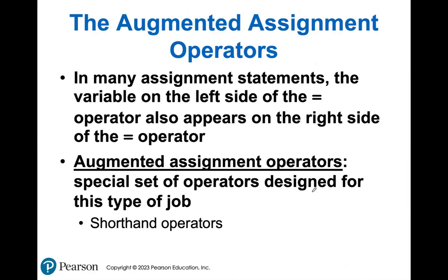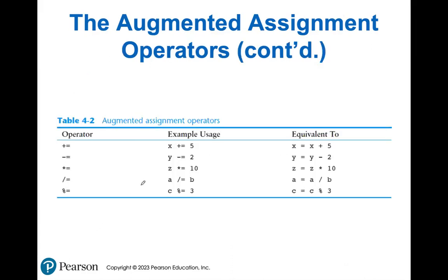Augmented assignment operators, also called shorthand operators, are very useful. Instead of writing x equals x plus five, you can just write x plus equals five. Whatever operation you need - addition, subtraction, multiplication, division - just put that sign next to an equal sign and the value. So x plus equals five is equivalent to x equals x plus five. Just a shorter, easier version to write.